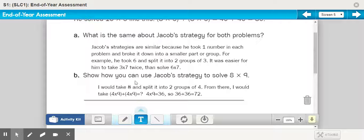5b reads: show how you can use Jacob's strategy to solve 8 × 9. So for my explanation for 5b, I split eight. You can also split nine, but it's trickier because nine is an odd number, so it will not be the exact same number. So keep in mind that eight is an even number. And so that's why I split eight. So my answer reads, I would take eight and split it into two groups of four. From there, I would take 4 × 9 + 4 × 9 = ?. 4 × 9 = 36. So 36 + 36 = 72.